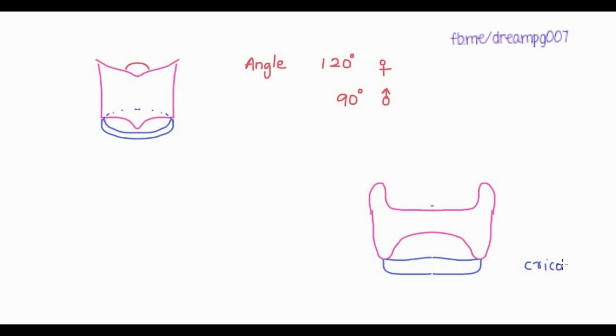Below the thyroid cartilage we can see the cricoid cartilage. The membrane between the thyroid and cricoid cartilage is the cricothyroid membrane. The thyroid cartilage is joined with the cricoid cartilage by the cricothyroid joint.